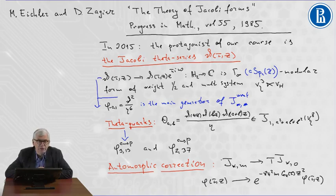The reason for this is the following. Jacobi Theta series is a Jacobi form of weight one half.